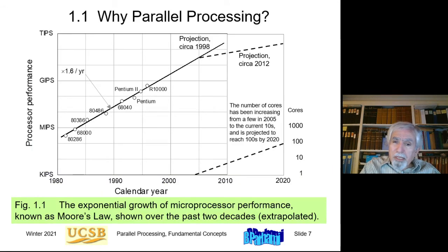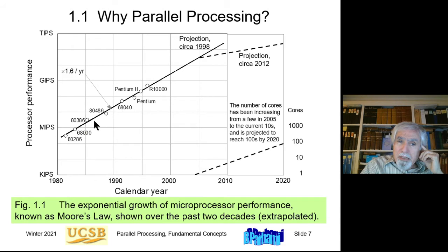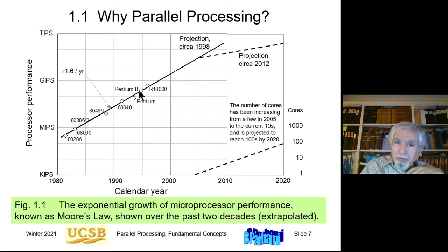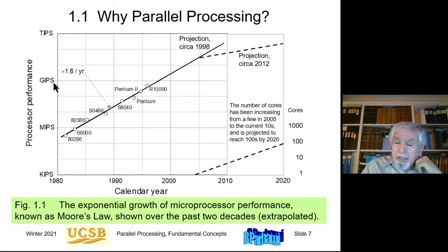So why parallel processing? This diagram from the textbook shows the trend in improved processor performance up to 2010, including various CPU products up to Pentium II and R10000. Performance is measured in instructions per second — mega IPS, giga IPS, and tera IPS — on a logarithmic scale. The diagram also shows a projection into the future up to around 2010.